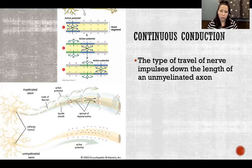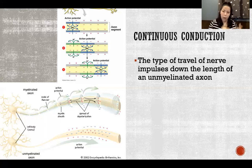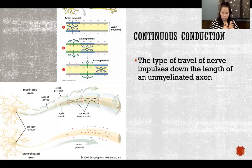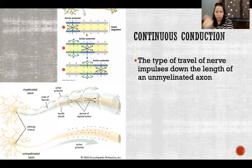As the inside becomes increasingly positive, that causes the gates in the neighboring segment to open so that positive ions rush in. At the same time, the first segment immediately starts to repolarize — pumping out positive ions to return to its resting state, ready to generate another action potential. The action potential travels all the way down the axon this way. Continuous conduction means one segment constantly triggers the impulse to continue in the next neighboring segment.